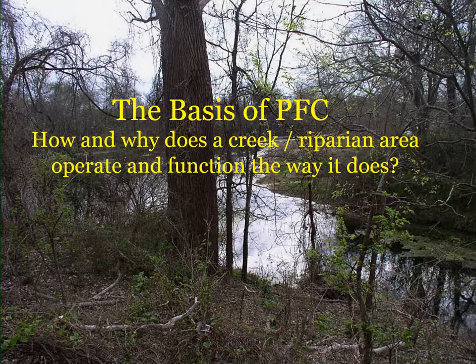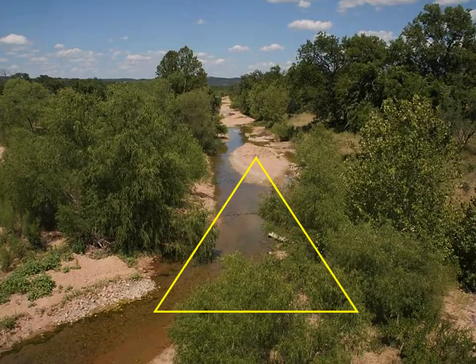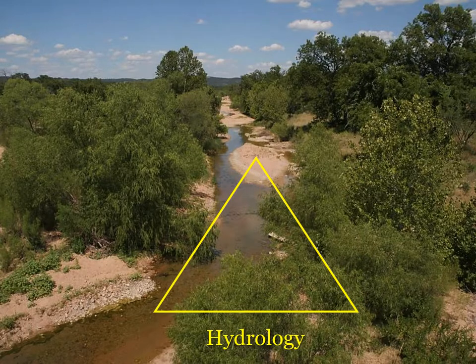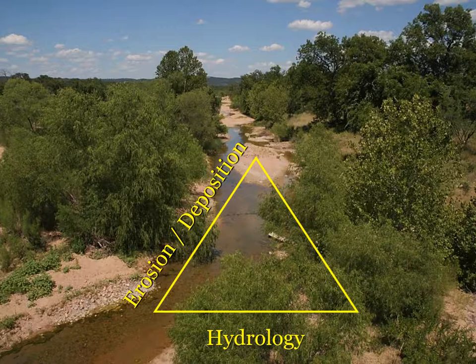The goal is to help people understand what's going on — what are the underlying functional processes in the riparian system? The basis of PFC is pretty straightforward: how and why does the creek and riparian area operate and function the way it does? Riparian areas operate under the interaction of hydrology, geomorphology — the erosion and deposition of soil material — and vegetation.